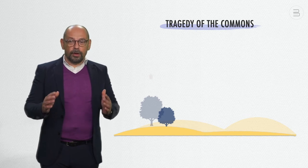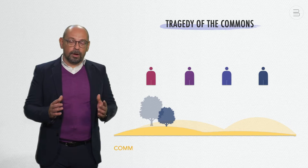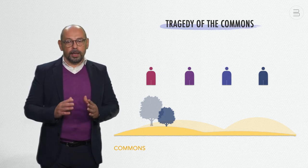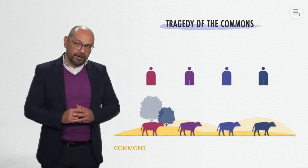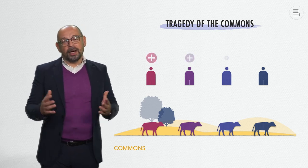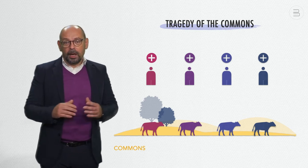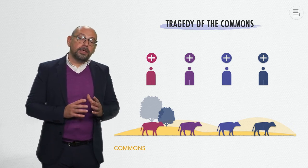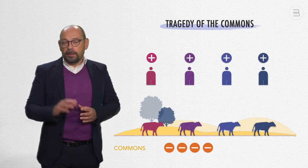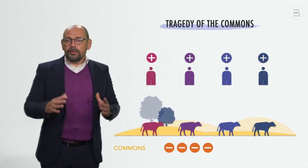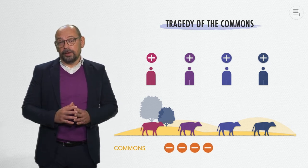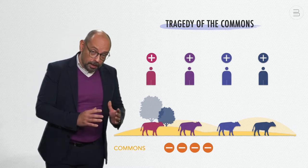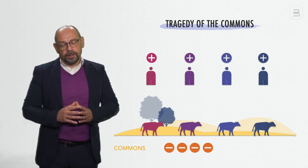Imagine a field that is held in common by a community of four people. The field is called the Commons because it's a common resource shared by all members of that community. Each person puts one cow to graze in the field. By doing so, they each earn positive utility of one cow, expressed here as plus one. Meanwhile, they decrease the positive utility of the field, here expressed in minus one. So each of them earned one and the field lost the ability to feed four cows.